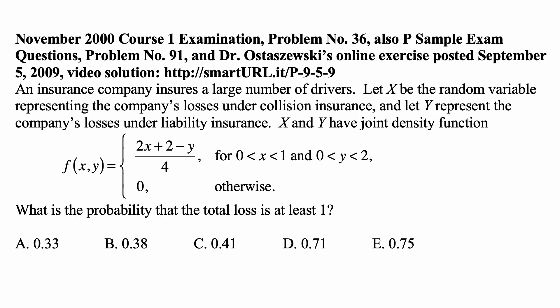Here's the problem for today for Exam P, Probability. An insurance company insures a large number of drivers. Let x be the random variable representing the company's losses under collision insurance, and let y represent the company's losses under liability insurance. x and y have joint density function equal to (2x + 2 - y)/4 for x between 0 and 1 and for y between 0 and 2, and 0 otherwise. So the joint density is positive only for x between 0 and 1 and y between 0 and 2, and given by this formula.